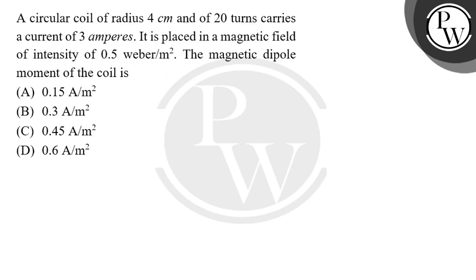Hello students, let's see this question. This question says a circular coil of radius 4 centimeters and of 20 turns carries a current of 3 amperes. It is placed in a magnetic field of intensity of 0.5 weber per meter squared. The magnetic dipole moment of the coil is...